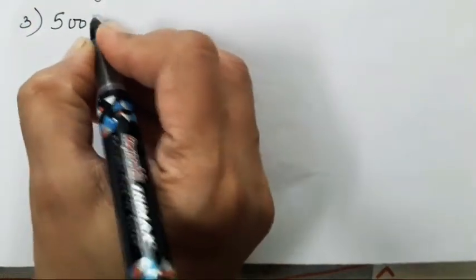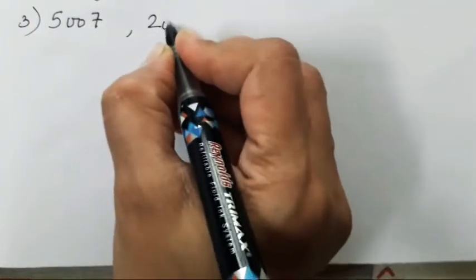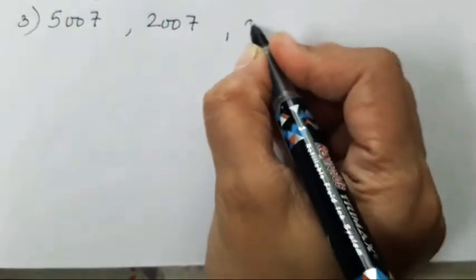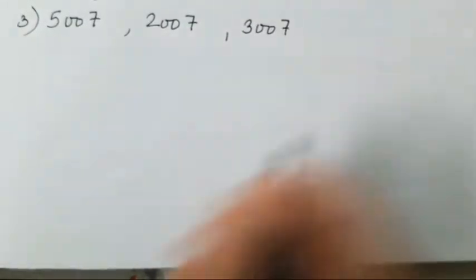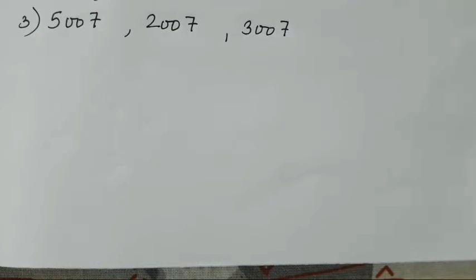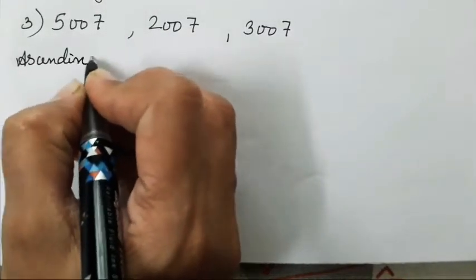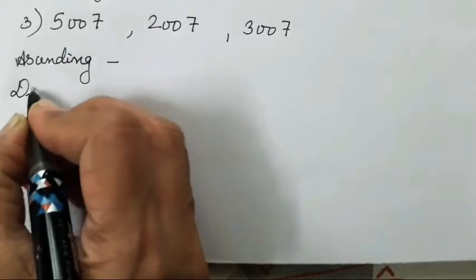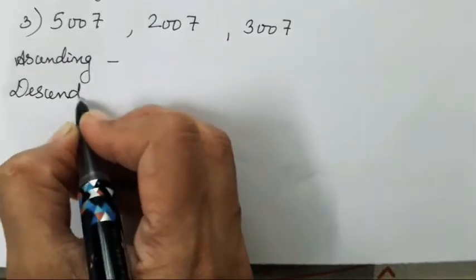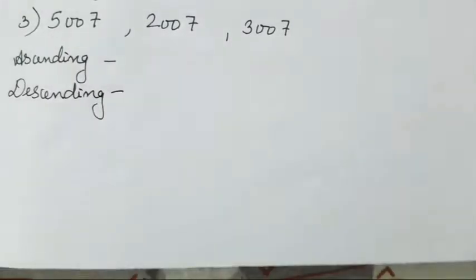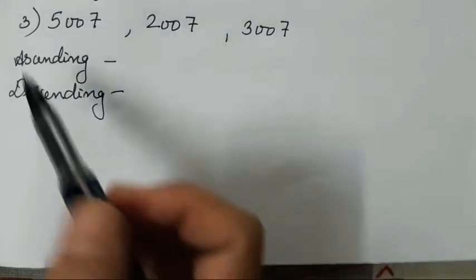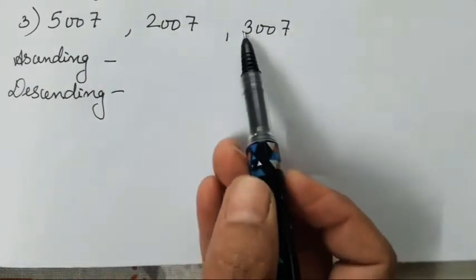Now let's solve the third sum. Now again it is going to be different. 5007, 2007, 3007. So you will see all the numbers are almost same. Isn't it?